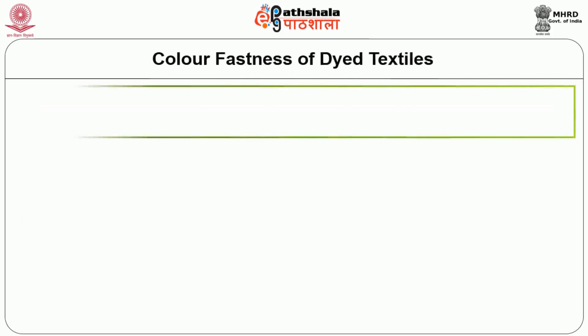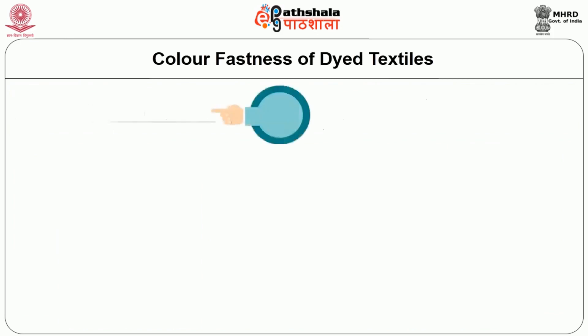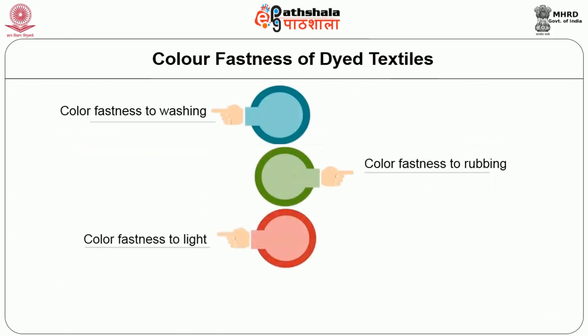There are many agencies that affect color fastness. The main four parameters we will discuss in this lecture are: color fastness to washing, because every garment should be washed after use; color fastness to rubbing, because garments are rubbed against metal or wooden parts while sitting or moving; color fastness to light, since fabrics are exposed to sunlight or artificial light; and color fastness to perspiration, because sweat can cause color bleeding.